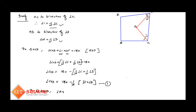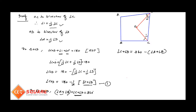In a quadrilateral, the sum of all four angles is equal to 360 degrees. Therefore, angle C plus angle D is equal to 360 minus angle A plus angle B, which means angle C plus angle D equals angle A plus angle B.